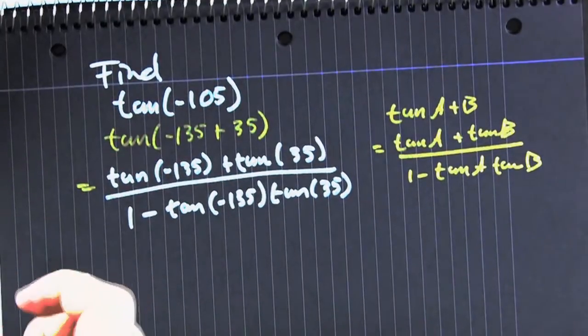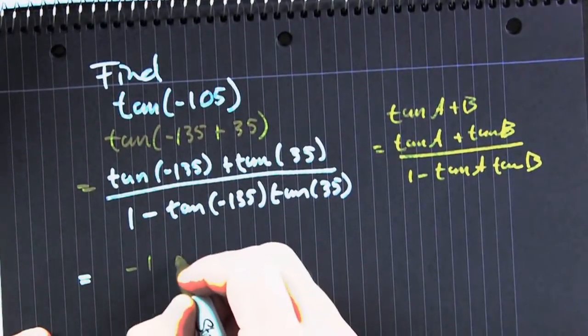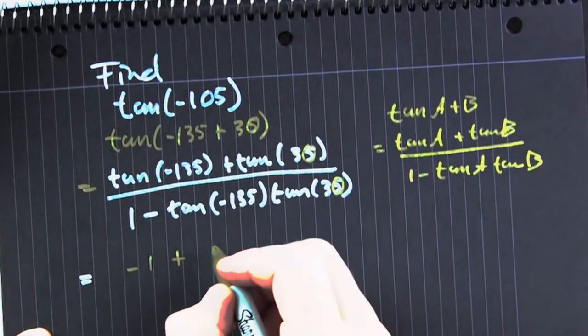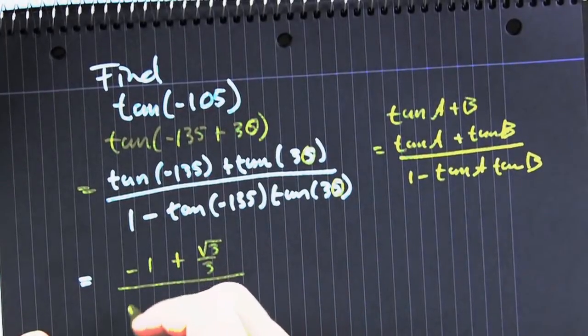Now you need to evaluate. What's the tangent of minus 135? Whoa, careful about that. That terminated in 3, not 2. Oh good, would you notice that minus 135 plus 35 wasn't 105?